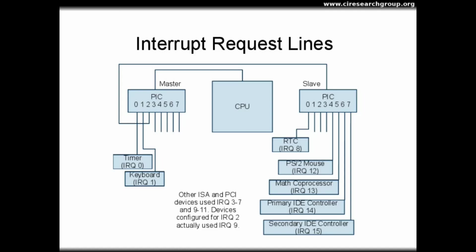These are numbered 0 through 15, but we have to skip number 2. Historically, pin number 0, which corresponds in software terms to what we call Interrupt Request Line, or IRQ 0, was connected to the timer. Interrupt Request Line 1 was connected to the keyboard. Different ISA and PCI devices could then use the remainder of the master chip by connecting to IRQ lines 3 through 7.